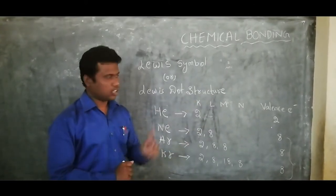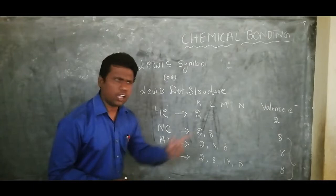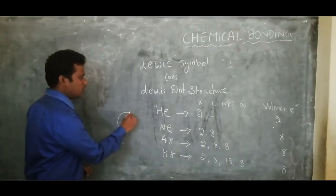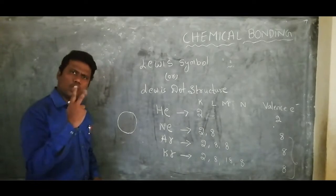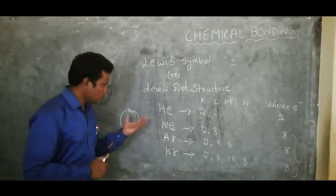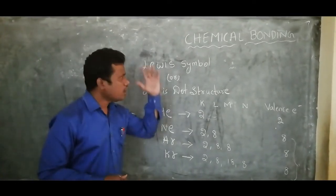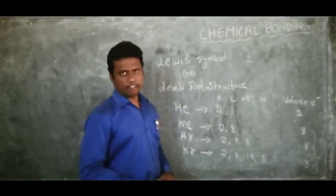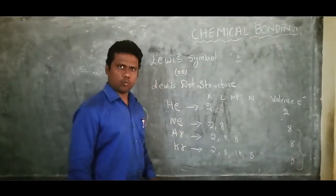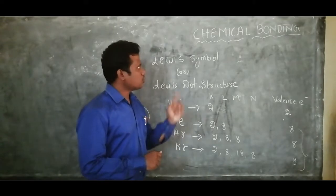Now, helium does not contain 8 electrons, but all other noble gas elements do. So how can we say helium is also a stable element? Helium is stable because it contains only one shell, and in the first shell we can fill only 2 electrons. So helium has completely filled electrons in its outermost shell. By observing the noble gases, we come to know the concept of chemical bonding.